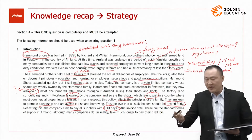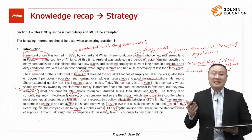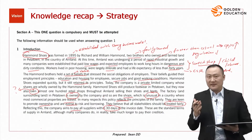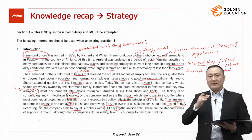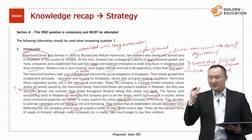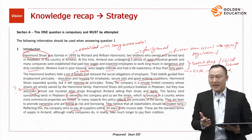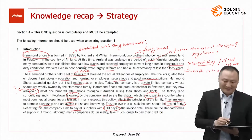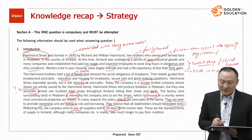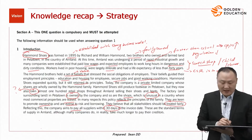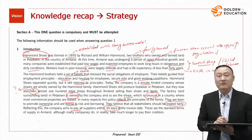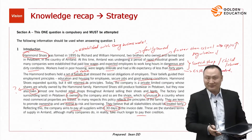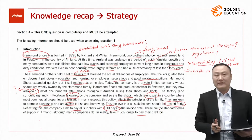They believe that all stakeholders should be treated fairly. Reflecting this, the company aims to pay all suppliers within 30 days of the invoice date. This is a V2MGO objective — clearly an objective, because it is specific, with a defined time. These are the standard terms of supply in Ireland, though many companies in reality take much longer to pay their creditors.